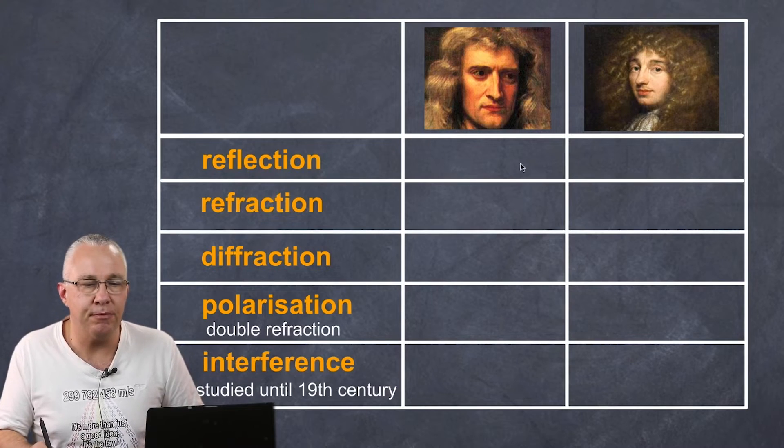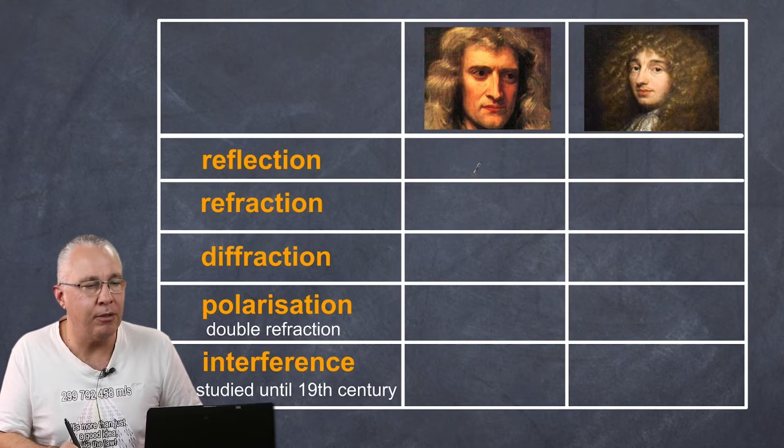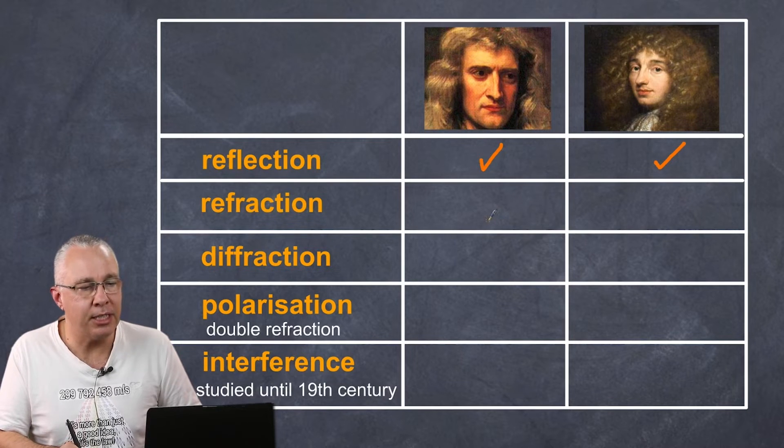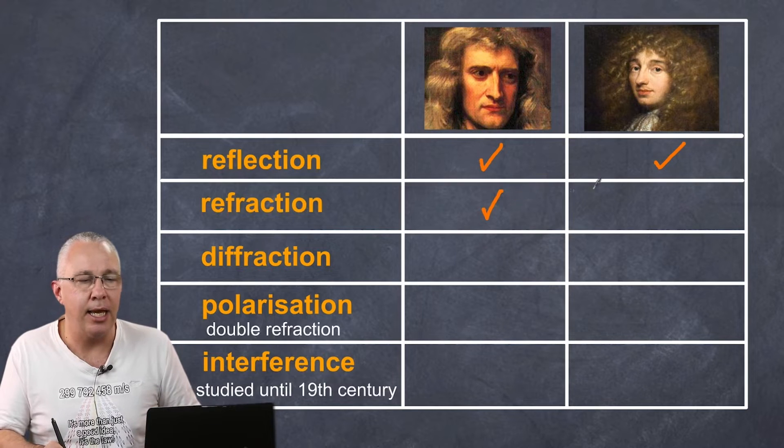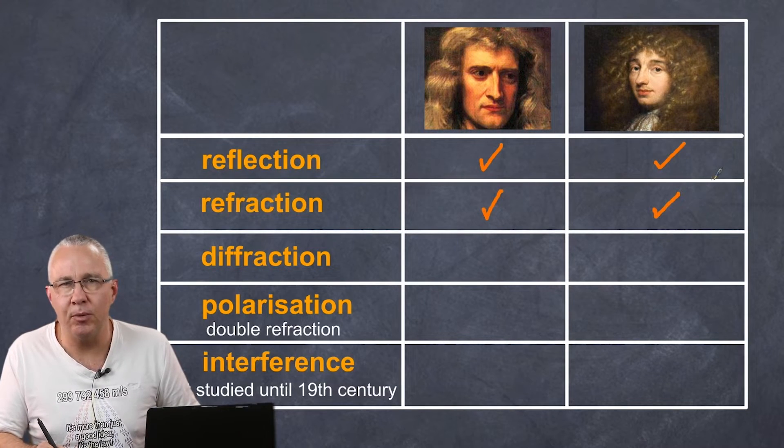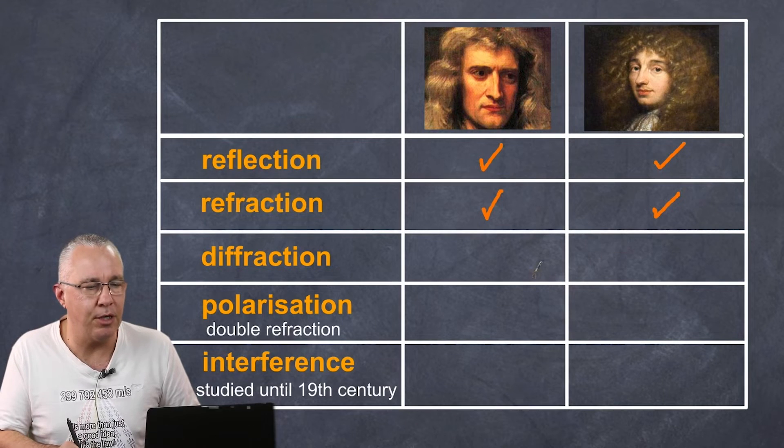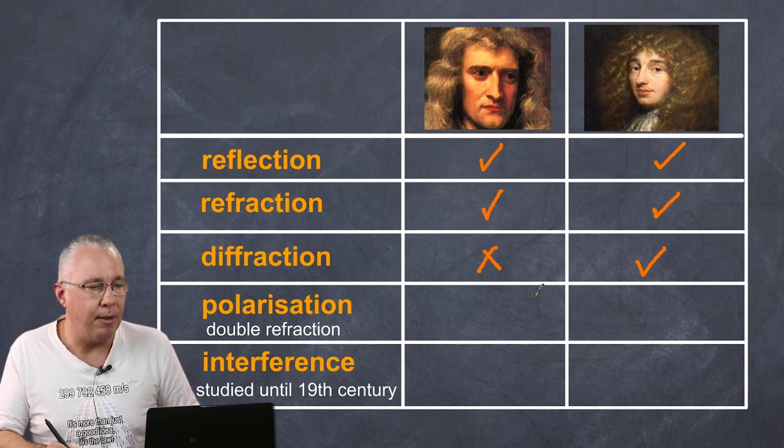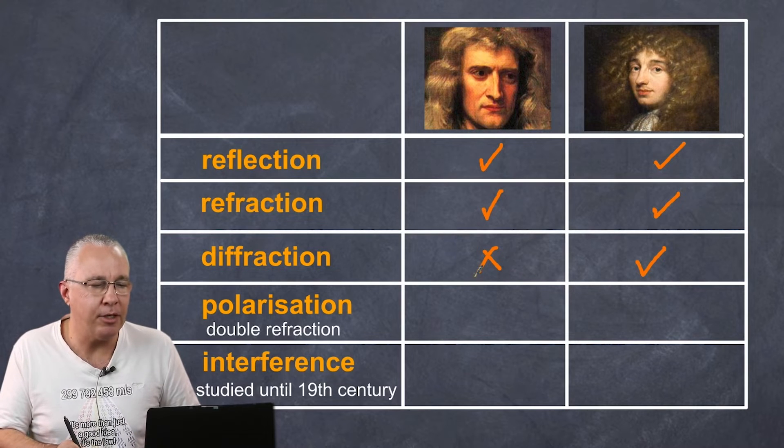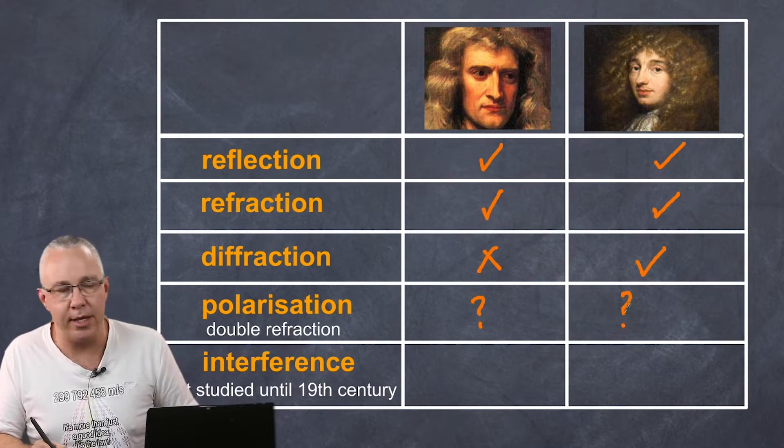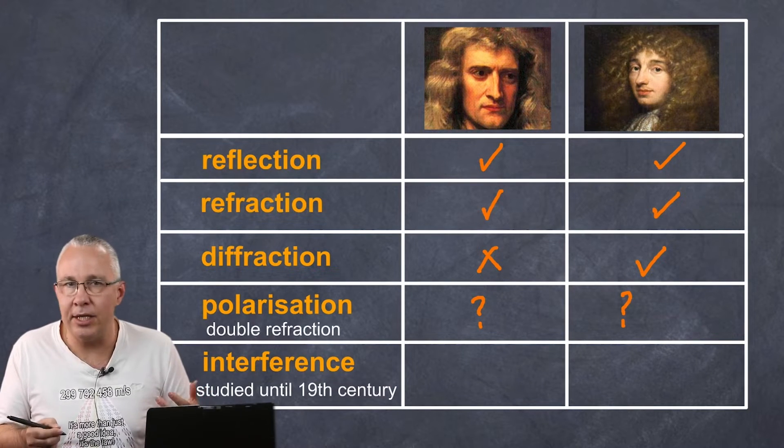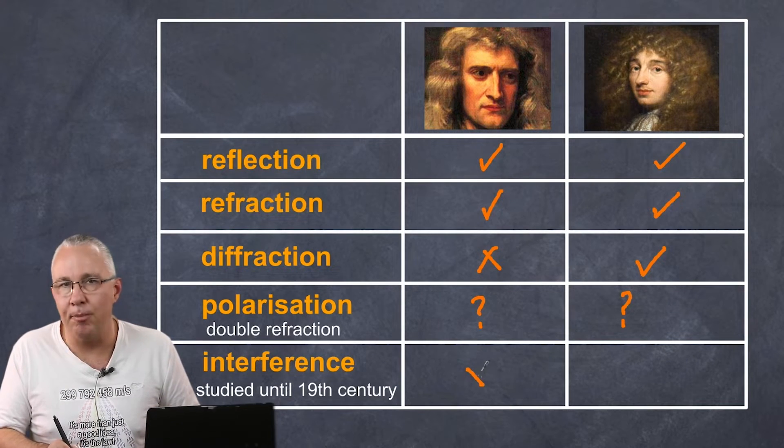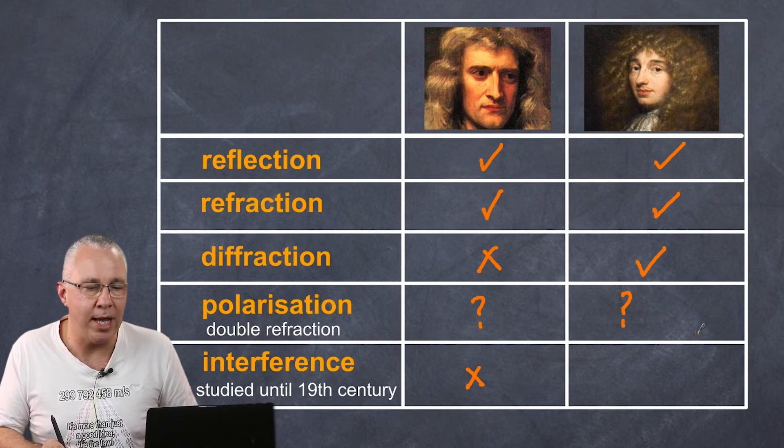Let's summarize. In terms of reflection, we can argue that Newton did a pretty good job, but so did Huygens. In terms of refraction, yes, Newton did a reasonably good job of understanding why it bends, as did Huygens. What about diffraction? Diffraction is problematic in terms of Newton, so no, that doesn't work. But Huygens' understanding definitely works. Polarization, which is the double refraction that was observed, neither could really provide a good explanation as to why they occurred. Then we got interference. In terms of interference, that wasn't really studied properly until the 19th century. Newton's understanding doesn't help us understand it at all, whereas Huygens' understanding of waves does.